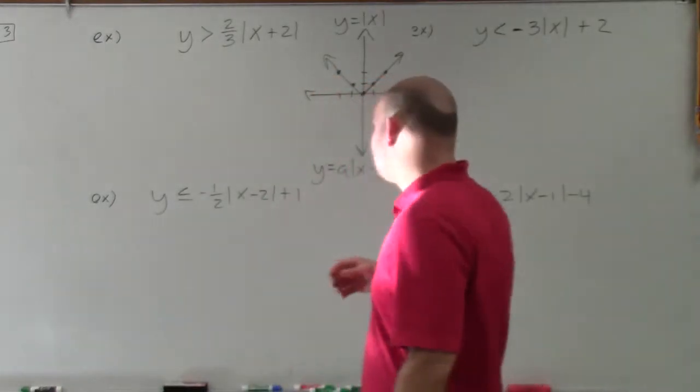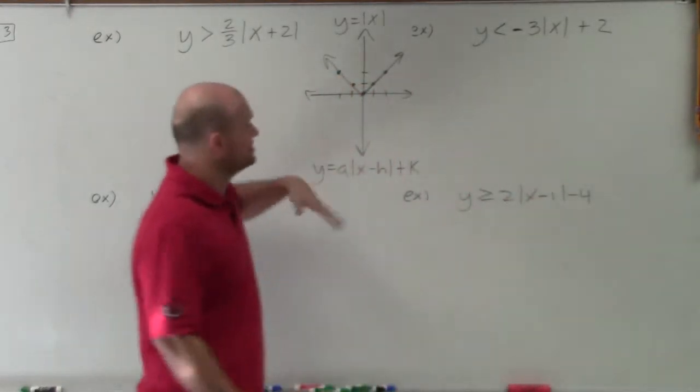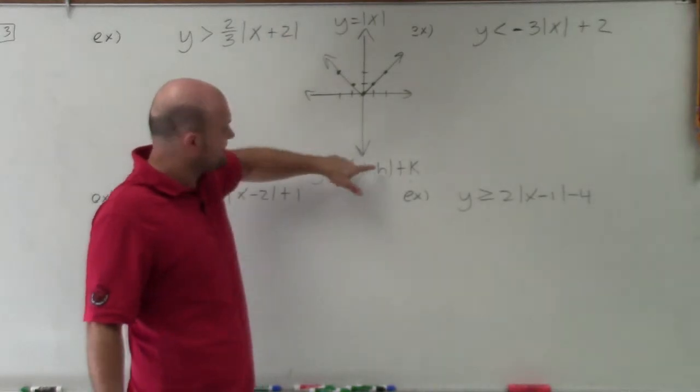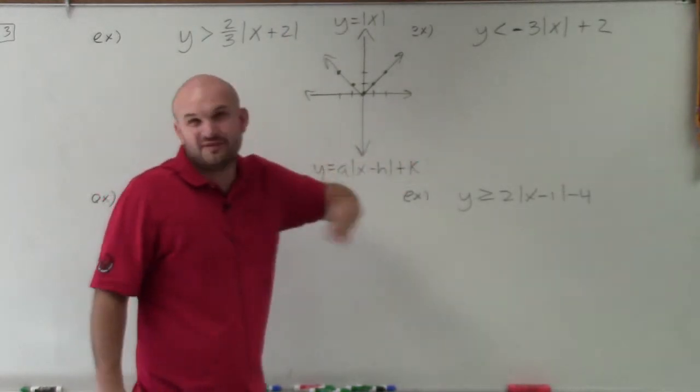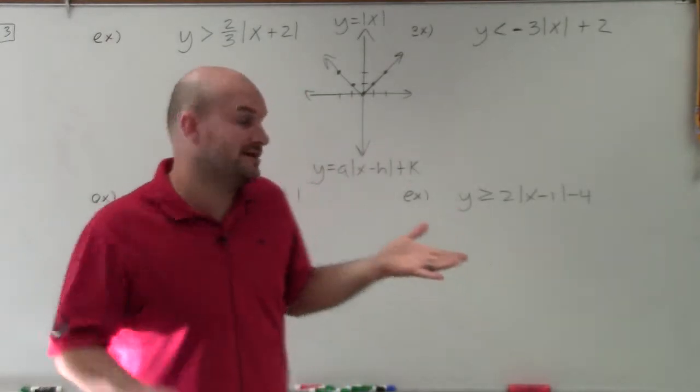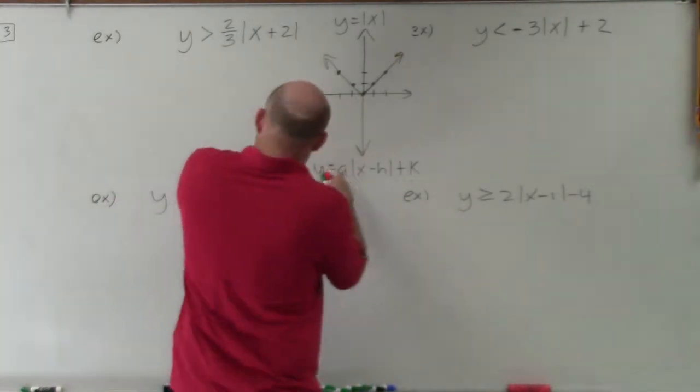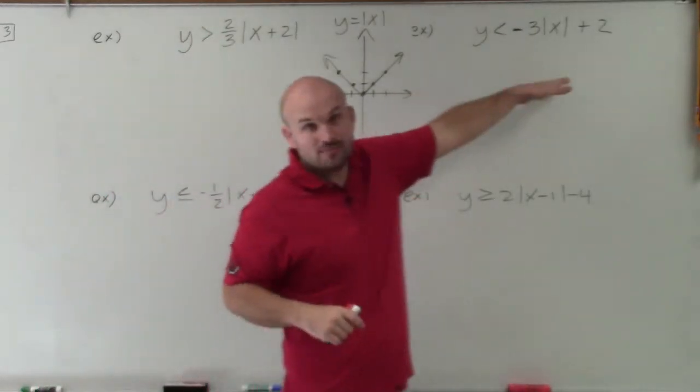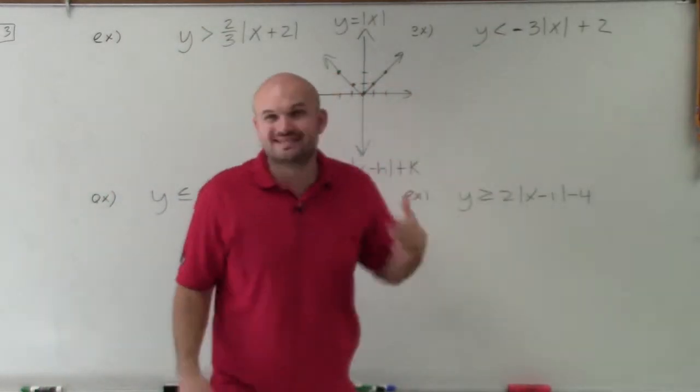In my previous video, we talked about the transformations of the parent graph when we had x minus h, x plus k - shifting the graph left to right or up and down. We had a that was just 1, but now you can see my a is either a fraction or a whole number, either positive or negative.